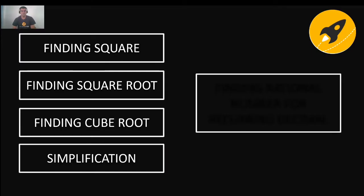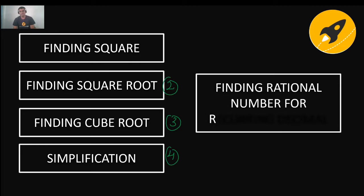I will be covering this topic in five stages. The first stage consists of finding a square. The second stage is finding the square root of a number. The third stage covers how to find the cube root of a number. The fourth stage covers quick tips for simplification, and in the last stage you will find the rational number for a recurring decimal — a topic of grade 9 and 10. Please don't miss that last part; it is very important.